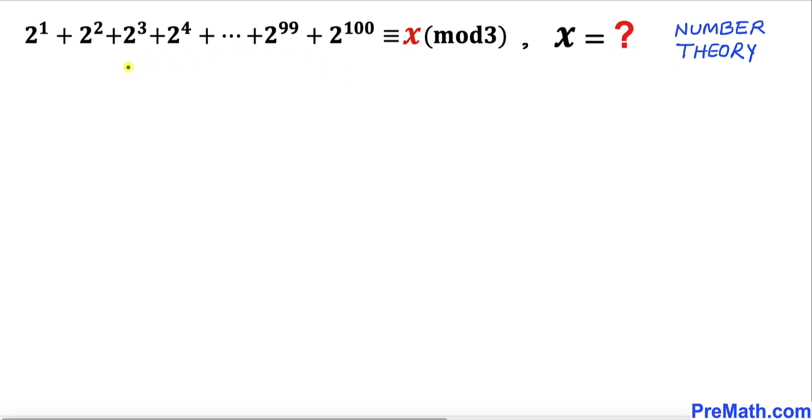Welcome to PreMath. In this video we have this number theory problem: 2^1 + 2^2 + 2^3 + 2^4 + ... + 2^99 + 2^100 ≡ x (mod 3), and we are going to find the value of x.